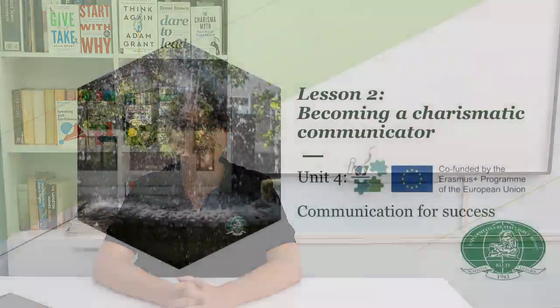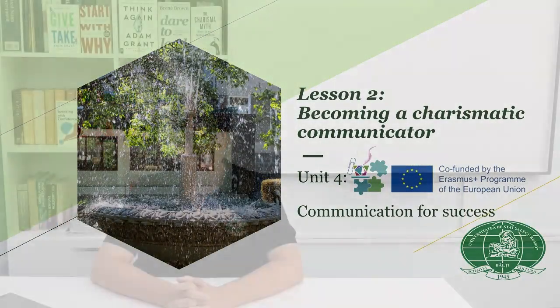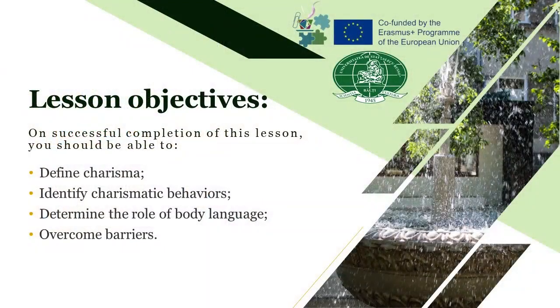Welcome to the second lesson of the fourth unit. The title of the lesson is becoming a charismatic communicator. The objectives of the lesson are: define charisma, identify charismatic behavior, determine the role of body language, and overcome barriers.